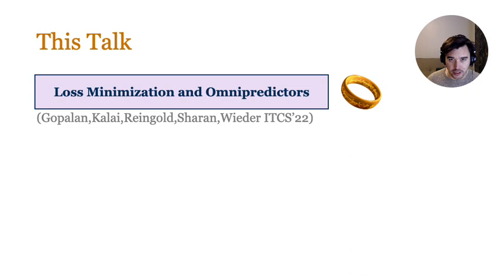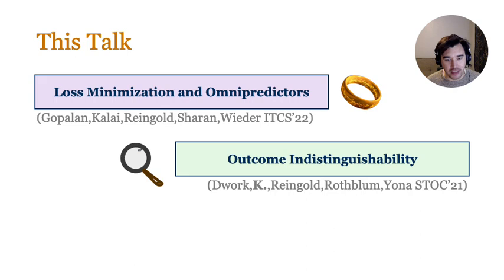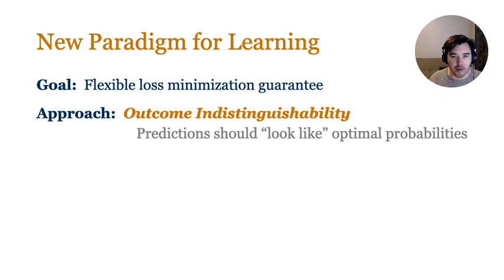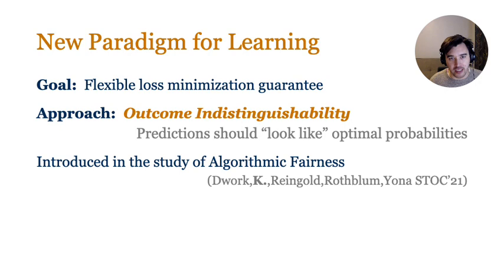Now that we've established omnipredictors, we'll switch gears to introduce outcome indistinguishability. Keeping in mind our goal of finding direct constructions of omnipredictors, we adopt the approach of outcome indistinguishability. Intuitively, outcome indistinguishability — or OI — requires that predictions should look like the Bayes optimal probabilities. My co-authors Dwork, Rheingold, Rothblum, Yona, and I introduced OI in the context of algorithmic fairness, originally as a generalization of multi-calibration. Since then, OI has taken on a life of its own and offers an alternative to loss minimization as a principled paradigm for learning.